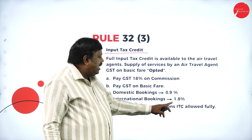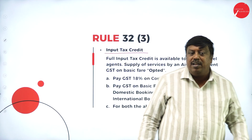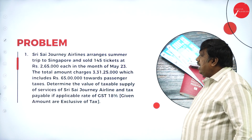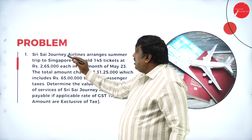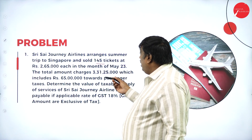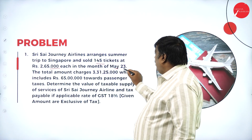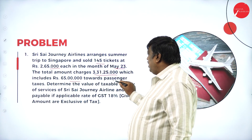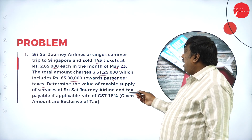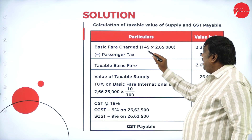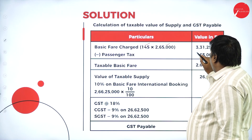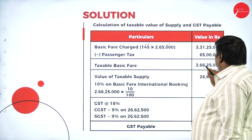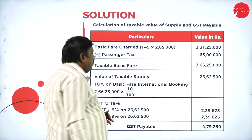For both options, ITC is allowed fully. Now let us solve a problem: Sri Sai Journey Airlines sold 145 tickets each at ₹2,65,000 in May 2023. The total amount collected was ₹3,31,25,000, which includes ₹65 lakhs of taxes. Therefore the taxable basic fare is ₹3,31,25,000 minus ₹65,00,000 = ₹2,66,25,000.